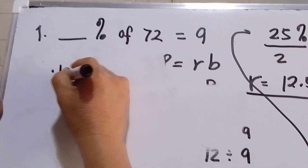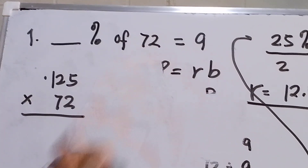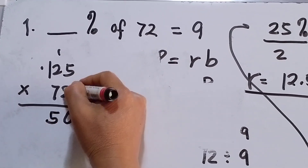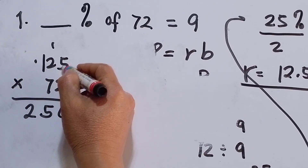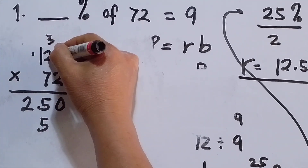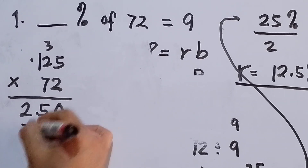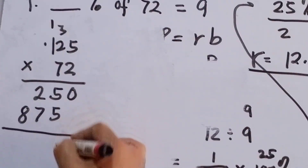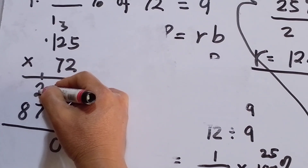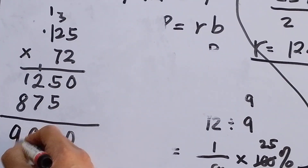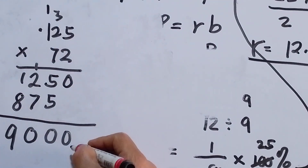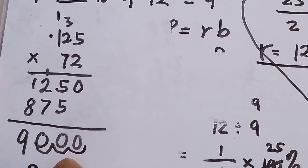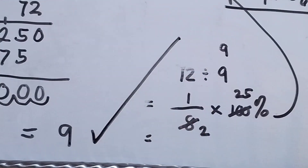We multiply 0.125 times 72 to verify it equals 9. Carrying out the multiplication: 0.125 times 72 gives digits that, with three decimal places counted from the right, result in 9.000. Since 9 equals 9, number one is correct.